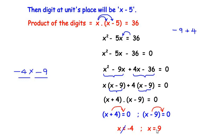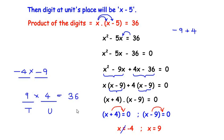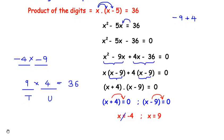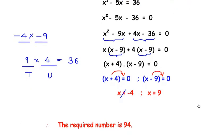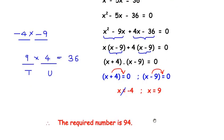So the digit at the tens place is 9. The units place has to be five less than 9, that is 9 minus 5 equals 4. The product of 9 and 4 also gives us 36, which satisfies the second condition as well. Therefore the required number is 94.